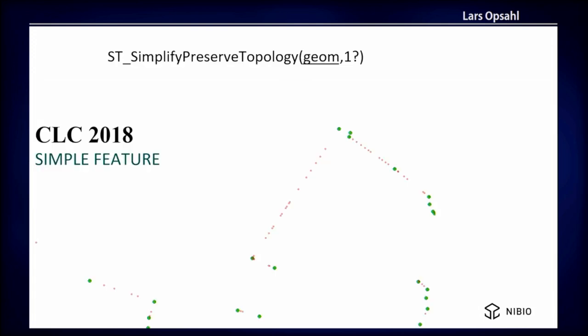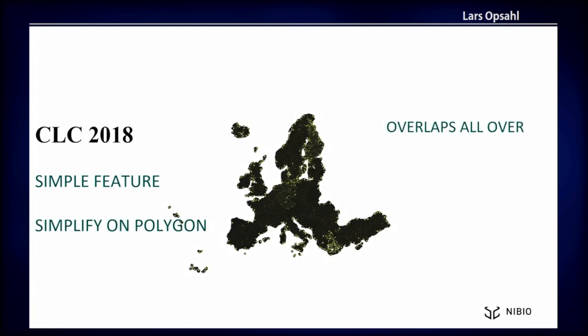I wonder why they didn't simplify the Korean LandCover. You see the green dots and the red dots here — the red dots are not actually needed. They don't give any more information; it's just extra data. So I ran a simplify. And this is the set of overlaps you get — overlaps everywhere. That's because simplify is run on each simple feature individually. This is what it looks like, and here in more detail, that's about two millimeters.